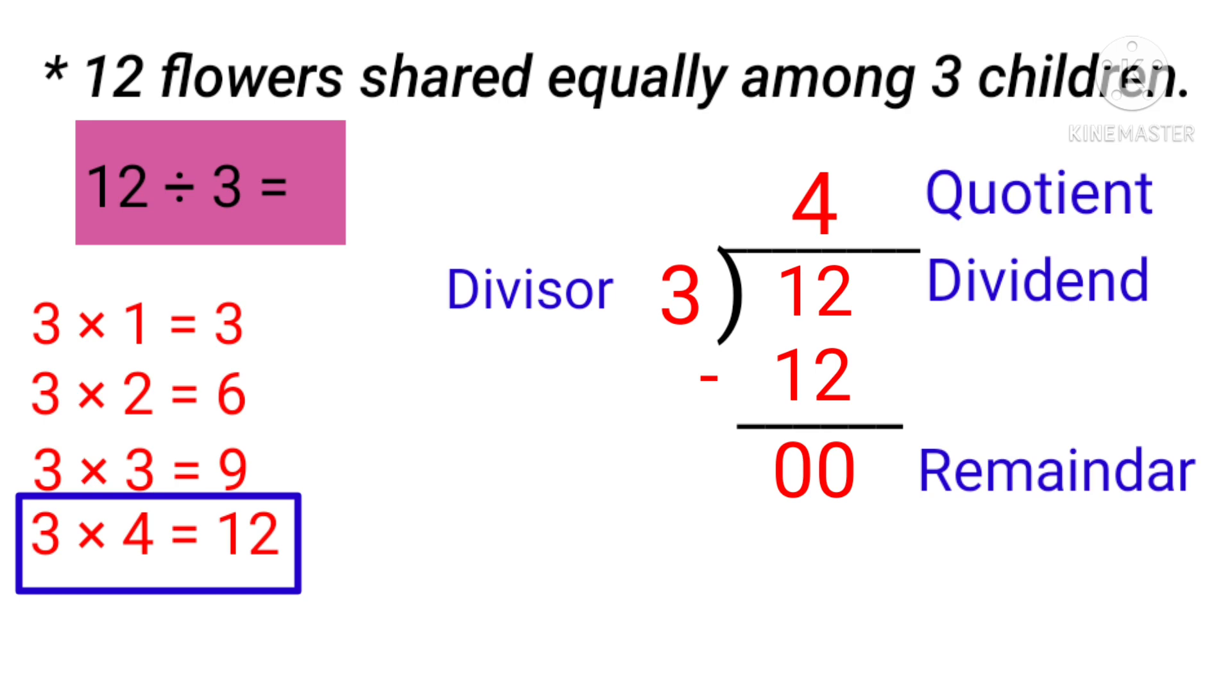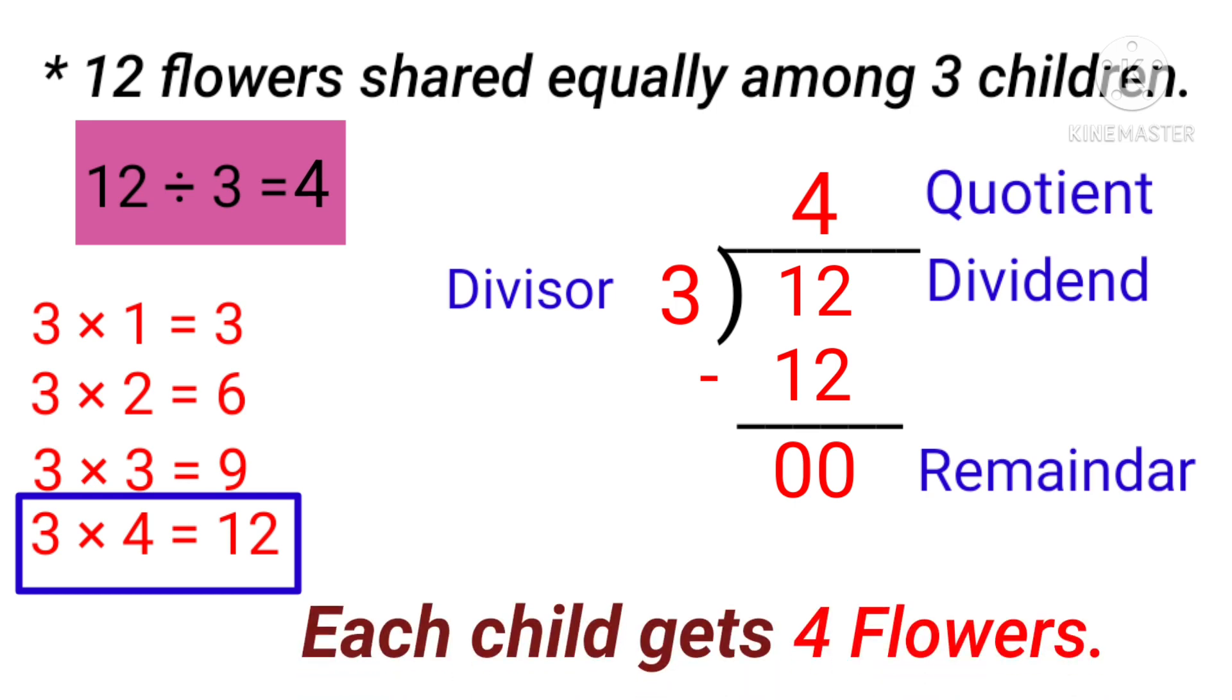12 divided by 3 is equal to 4, because 3 fours are 12. Each child gets 4 flowers.